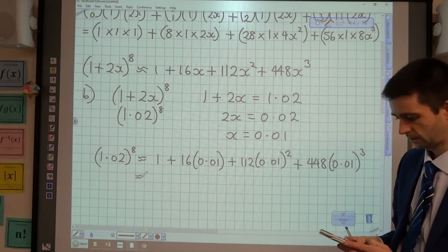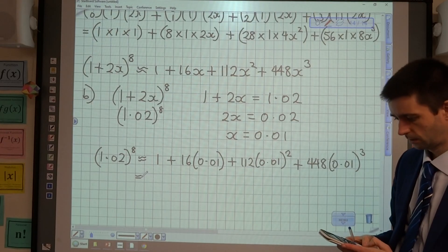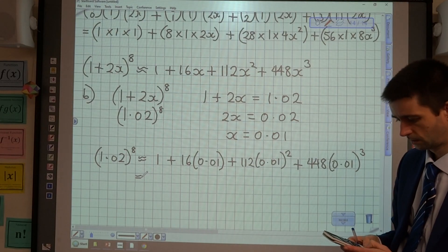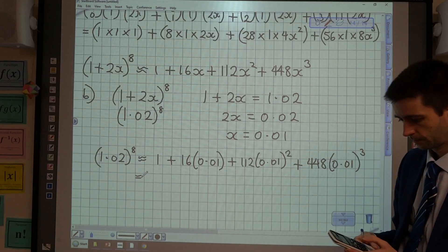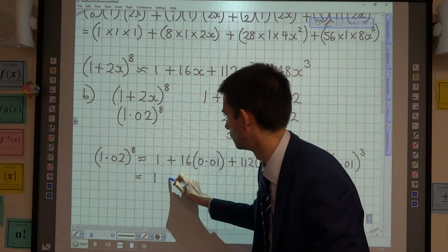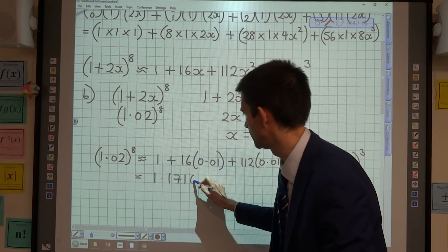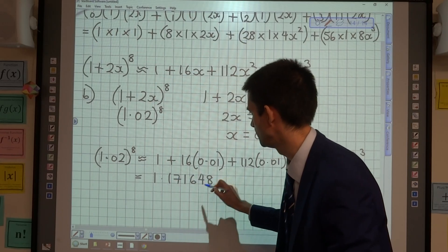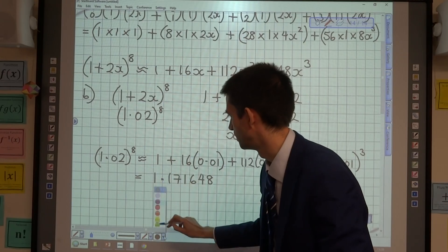So 1.16. And I've got 1.171648 as my approximate value.